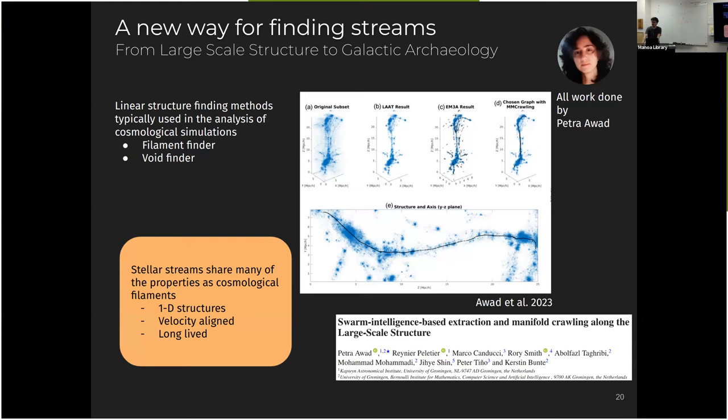But stellar streams are actually quite similar to cosmological filaments. They are 1D structures, they're velocity aligned, they're very thin. So when she applied this technique, that you can read more about it in this swarm intelligence-based extraction of manifolds crawling along the large-scale structure. It's a very fancy name, but basically it's a paper that studies four different methods of finding filaments. And she found out that this method here, the LAAT, is the one that works best for streams.